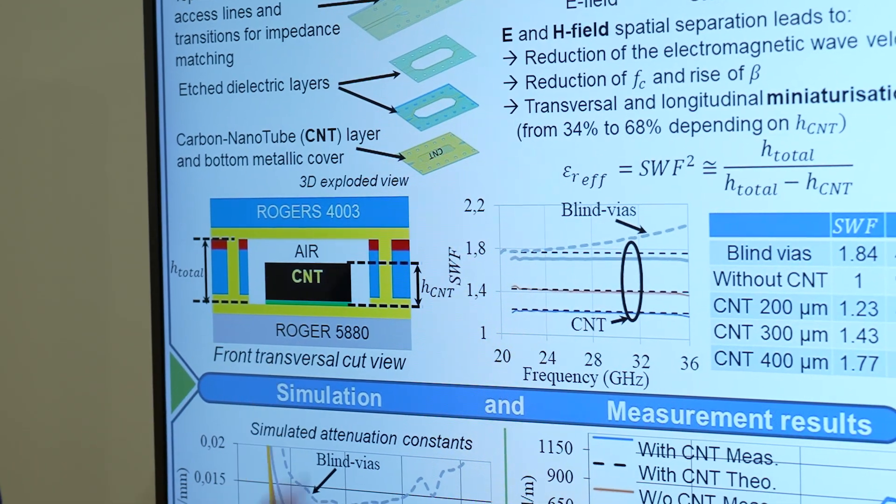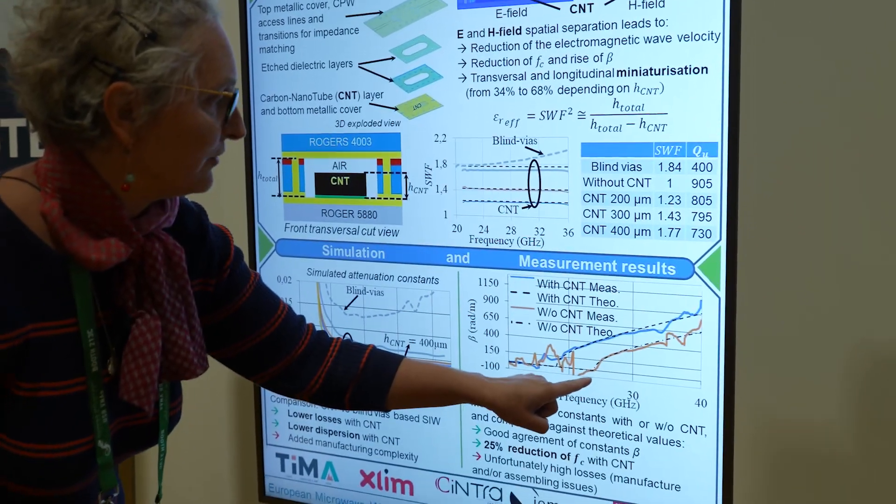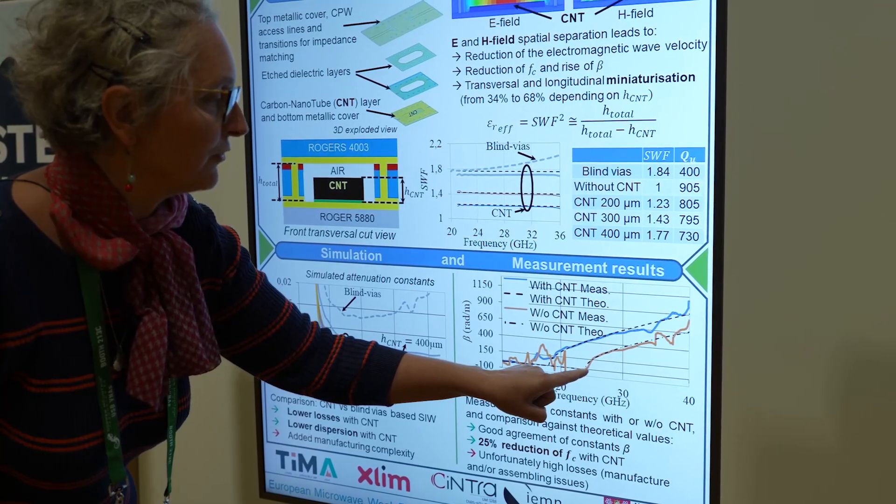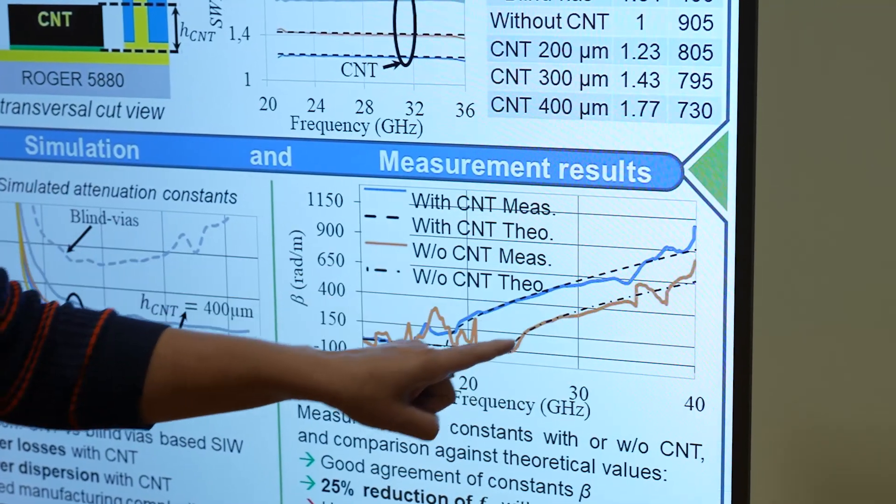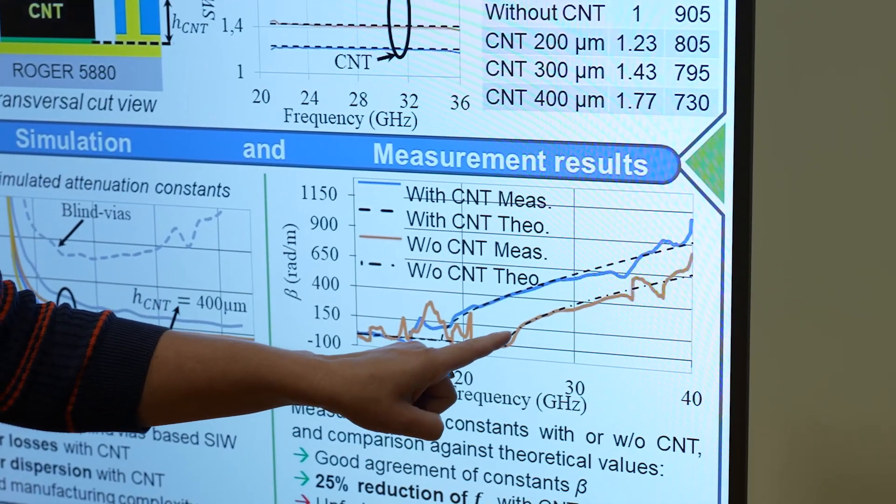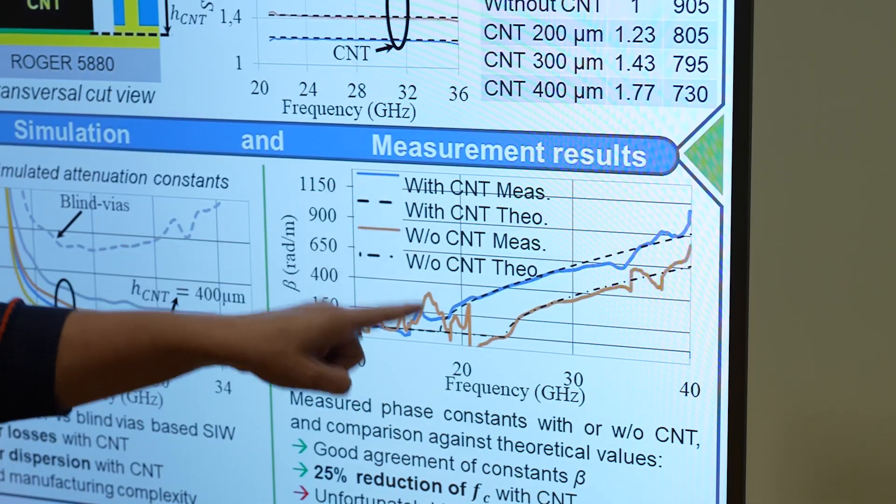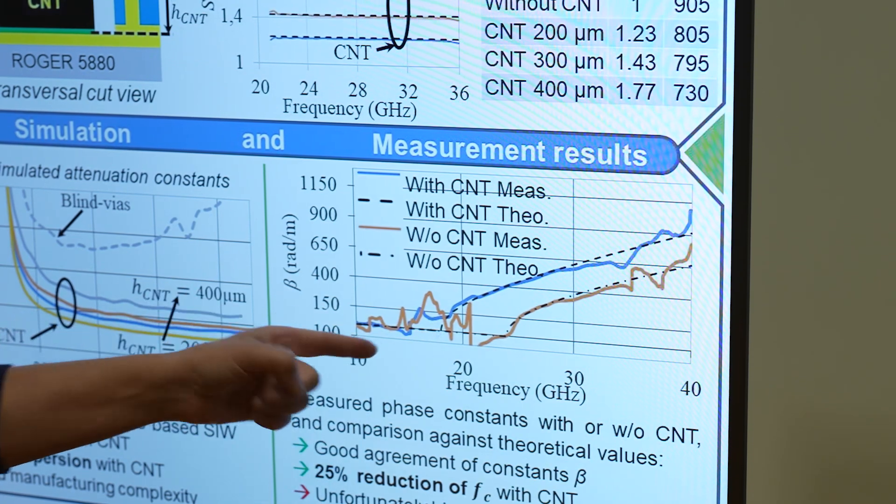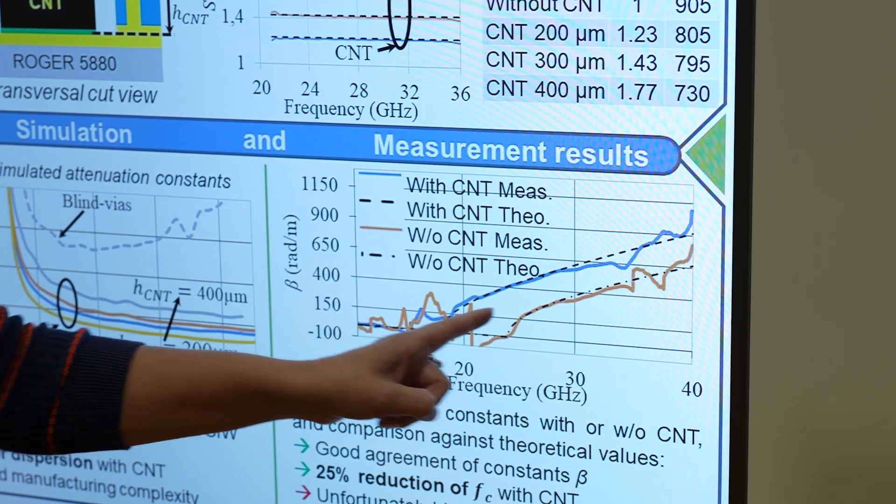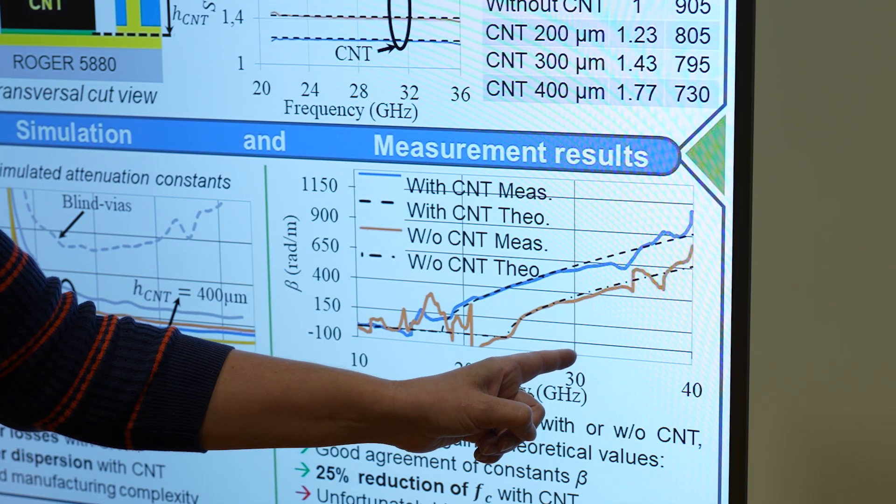With slow-wave effect, what we can see—I'll go directly to the results—is that the waveguide without the slow-wave effect, the orange curve here, has a cutoff frequency that is higher than the one with slow-wave effect. This is very interesting because, as we can see, for a given frequency of operation...